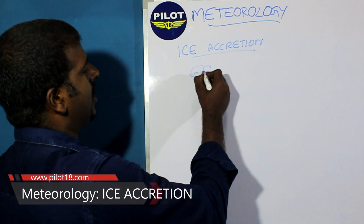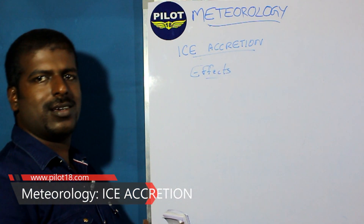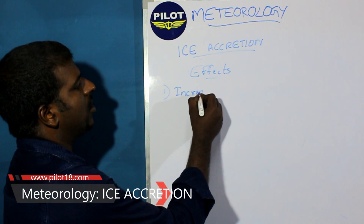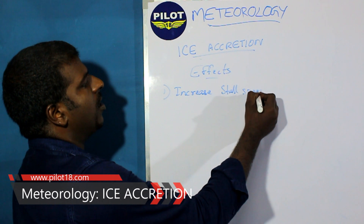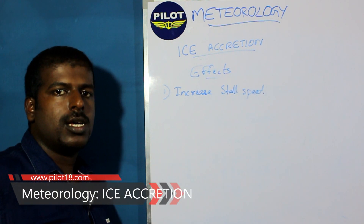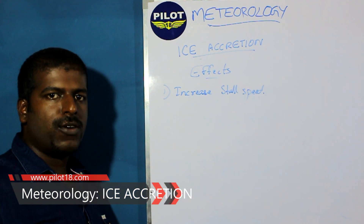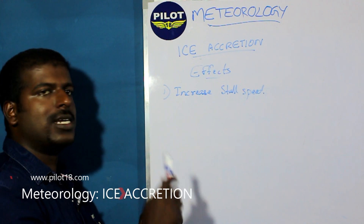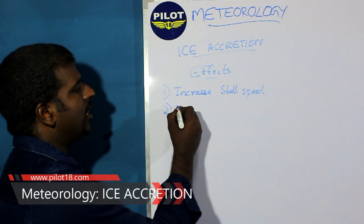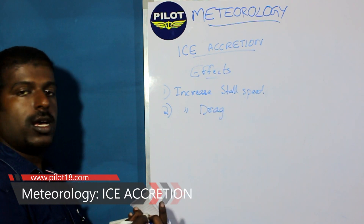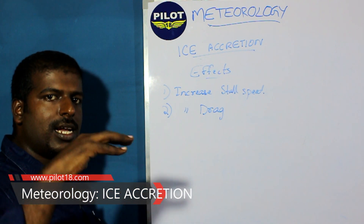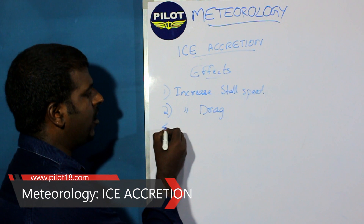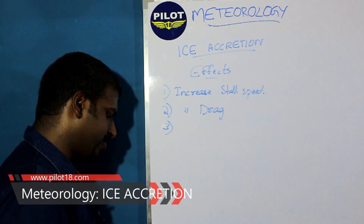Now, what are the effects of icing and how are they significant to aviation? First, increased stall speed: if an aircraft normally stalls at 50 knots, with icing it can stall even at 80 knots. Second, increased drag: if the aircraft is not aerodynamic, drag will be increased. Icing can alter the aerodynamics and increase drag, which also results in less lift.